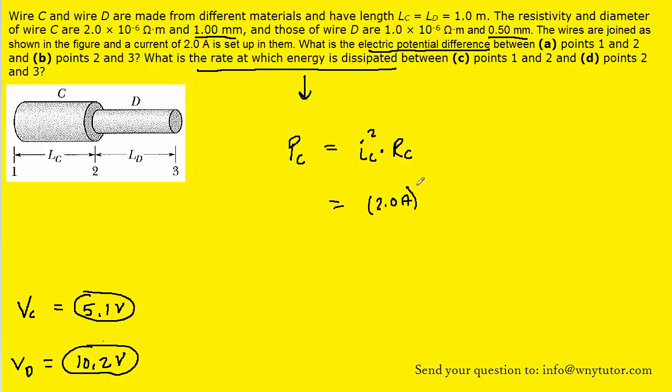Don't forget to square it. And then we determined the resistance of wire C earlier in the problem. You will recall that that was equal to 2.55 ohms. And so when we work this out, we get roughly 10 watts. And this is the correct answer to part C.